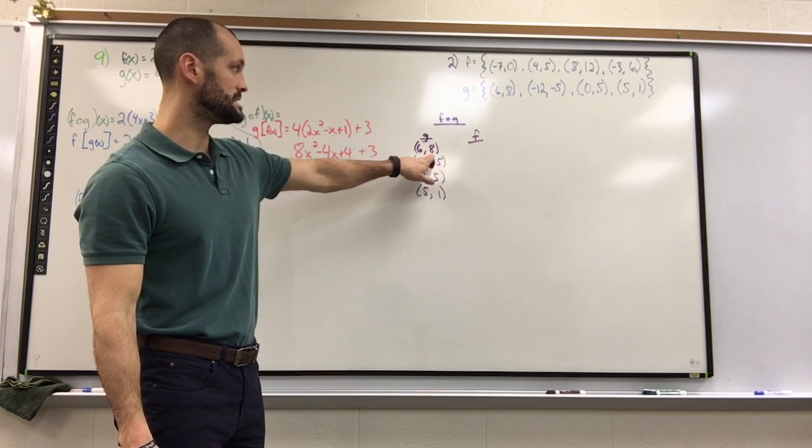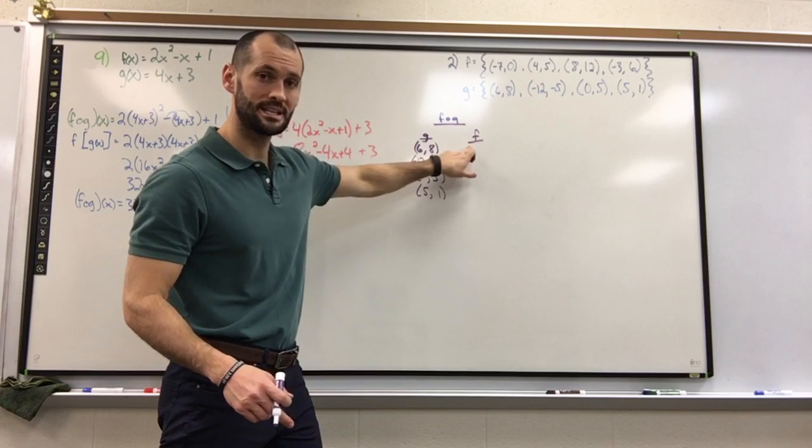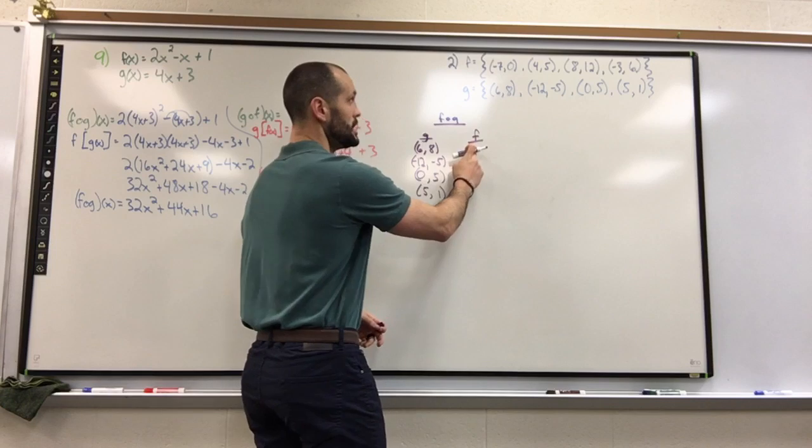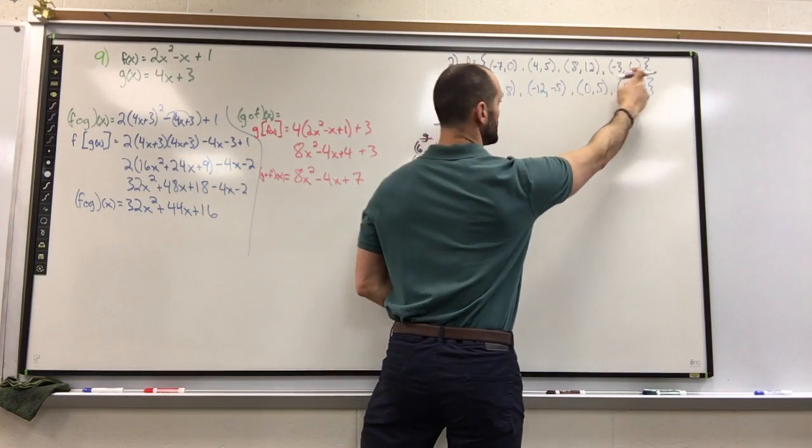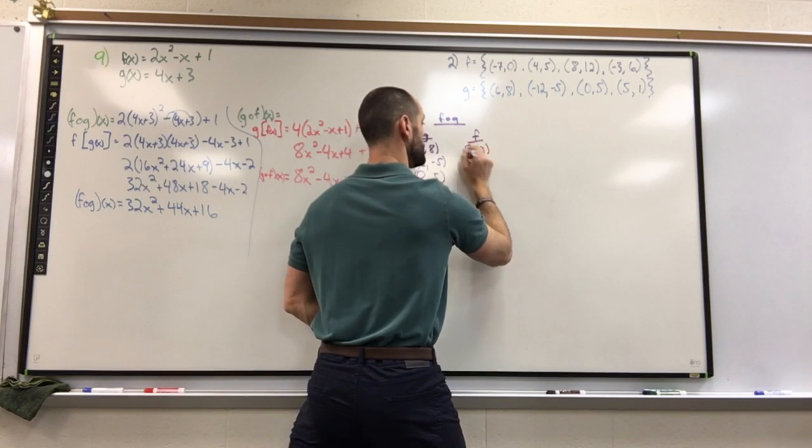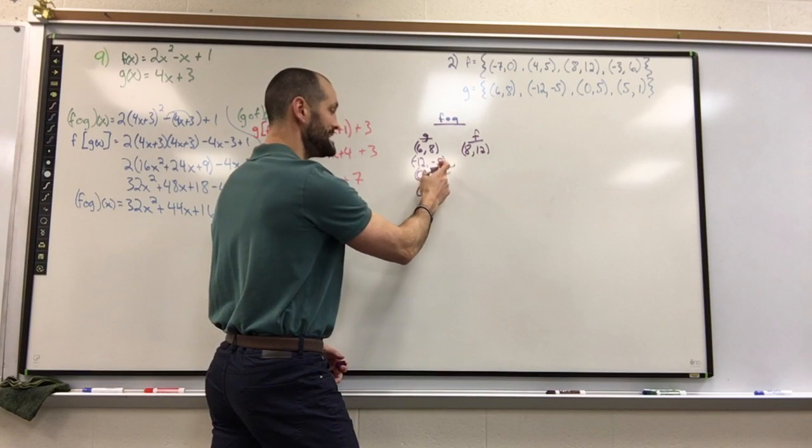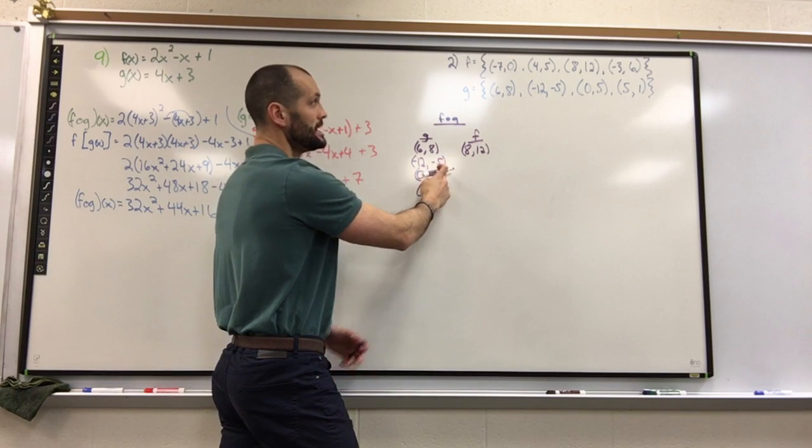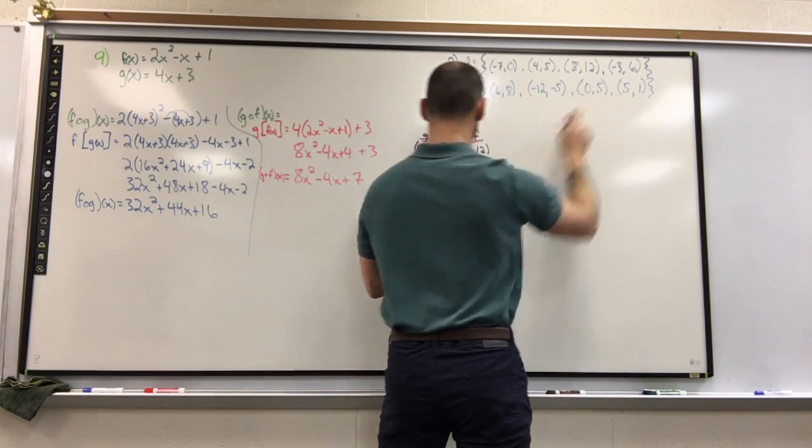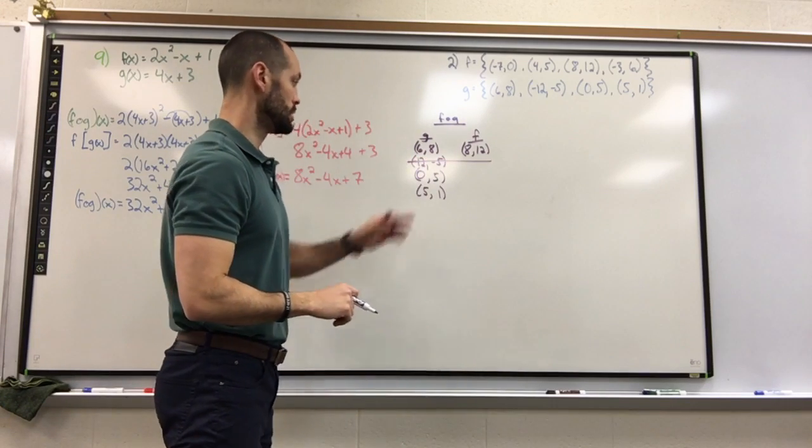Notice that the g point ends in an 8. It can only handoff to an f point that begins with 8. Do you notice the inside handoff here? 8 can only handoff to 8. So I look at all my f points. Do any of them start with an 8? Oh yes, (8, 12). Do you notice the inside handoff has to be the same? So next, if I'm ending the g point with a -5, do any points in f start with -5? No, so this is not going to exist. Do any of them start with 5?